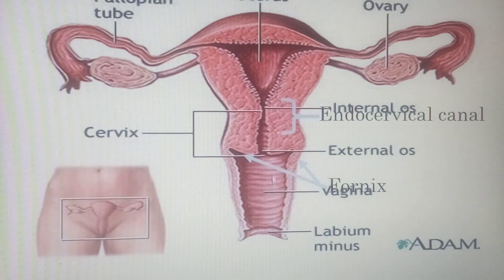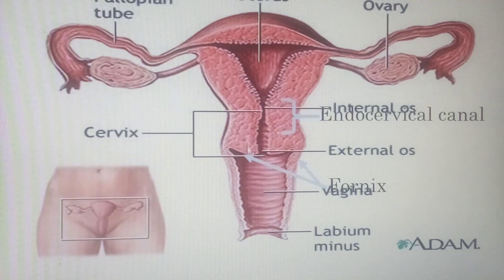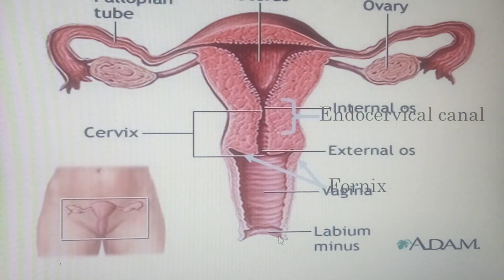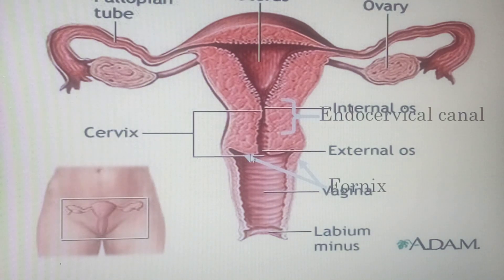The vagina is a long fibromuscular tube. This is a coronal section of the female reproductive system showing the lateral aspects. The lateral walls tend to have almost the same length.